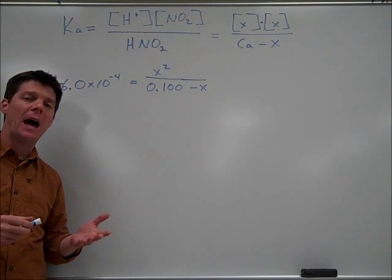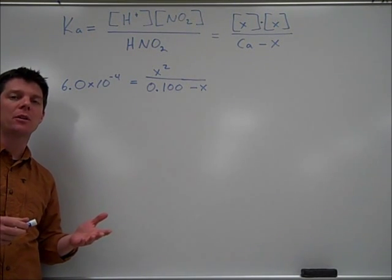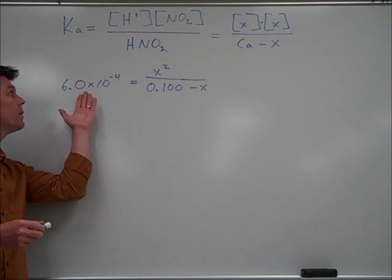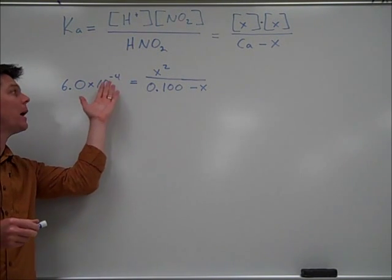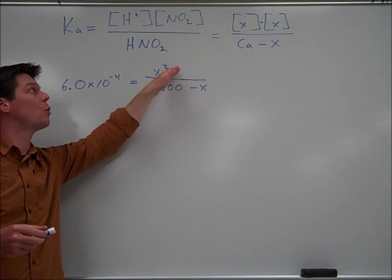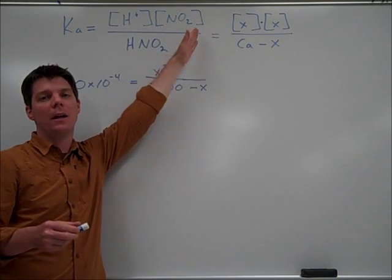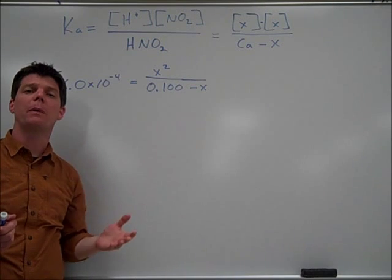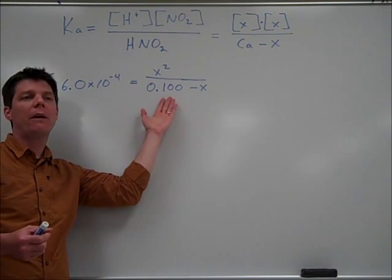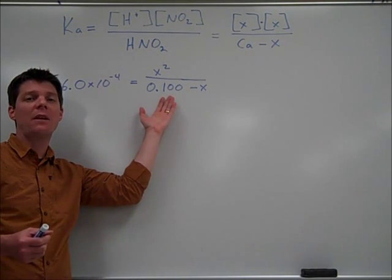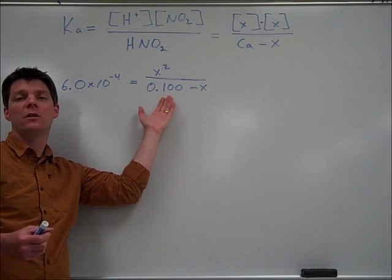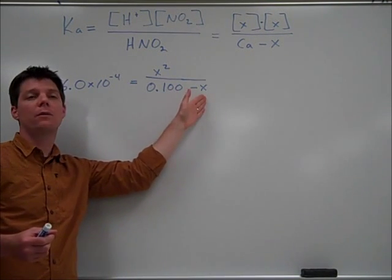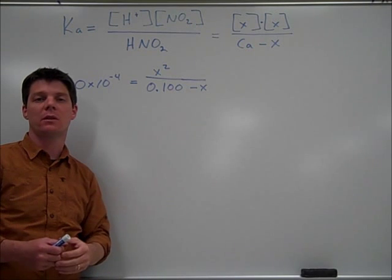We've substituted in the values for our Ka expression. The Ka value was 6.0 times 10 to the minus 4. We have x squared representing the hydrogen ion and nitrite ions that are going to be produced by the dissociation. And then we have the original concentration of the nitrous acid, which was 0.100 molar, and we're subtracting from that the amount of acid which has dissociated.